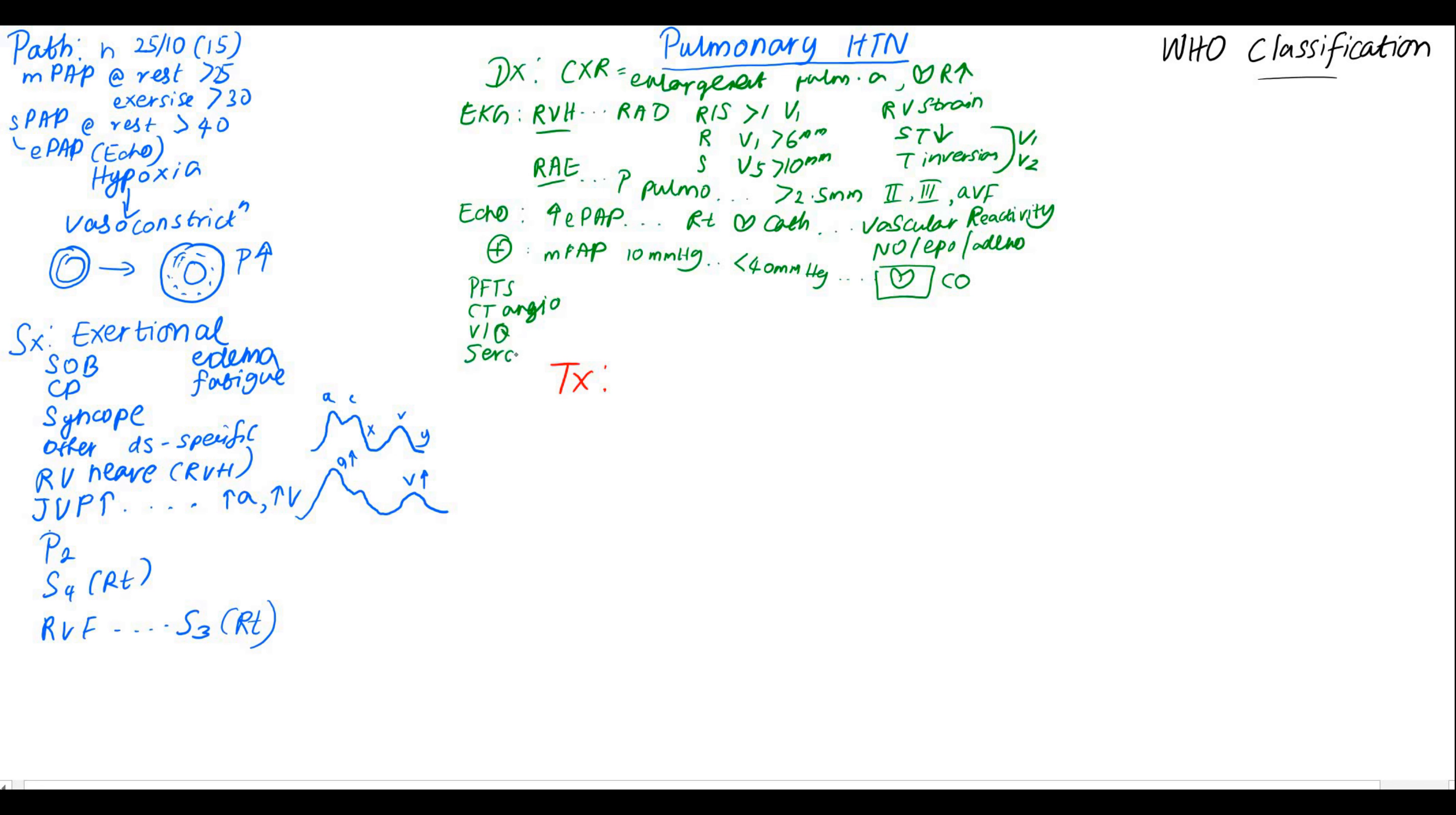We can also do serology testing to look for any other causes. We can do serologies of ANA, rheumatoid factor, SSA, SSB, HIV. These are helpful to look for other etiologies of pulmonary hypertension.